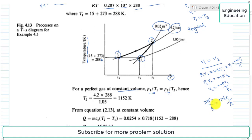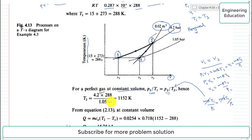Rearranging for T2: T2 = P2 × T1 / P1. Here P2 is 4.2 bar, T1 is 288 K, and P1 is 1.05 bar. Since both pressures are in bar they cancel, giving T2 = 1152 K.